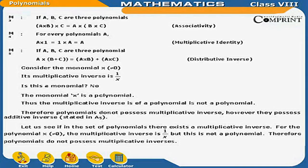Consider the monomial x, which is not equal to 0. Its multiplicative inverse is 1/x. Is this a monomial? No. The monomial x is a polynomial, but its multiplicative inverse 1/x is not a polynomial. Therefore, polynomials do not possess multiplicative inverse. However, they do possess additive inverse as stated in A5.